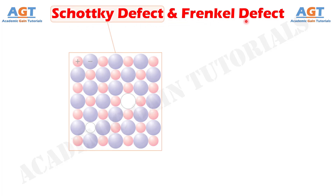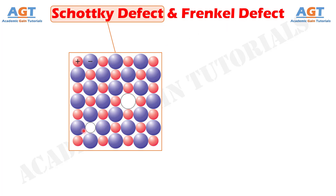Schottky defect occurs when oppositely charged atoms, cation and anion, leave their corresponding lattice sites and create a pair of vacancy defects. Since both cation and anion leave the lattice sites at the same time, overall electrical neutrality of the crystal is maintained. However, density reduces because of the vacancies.